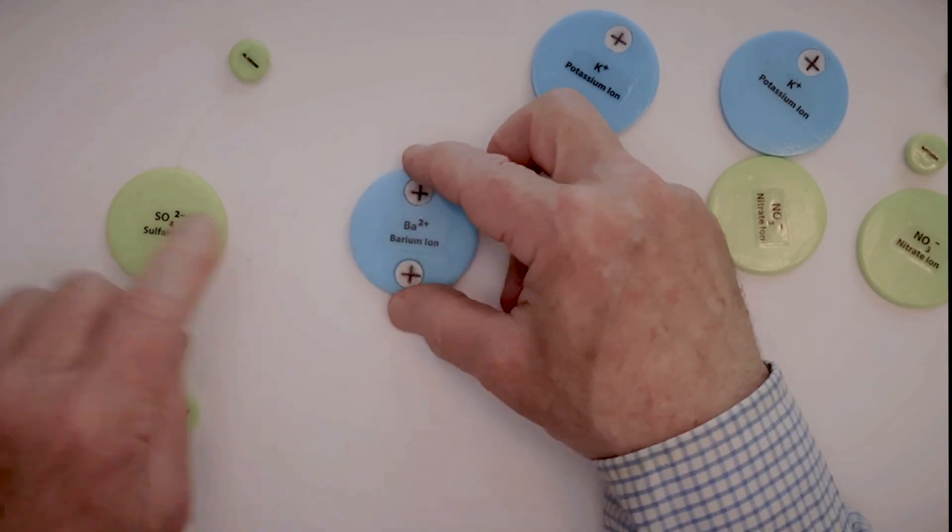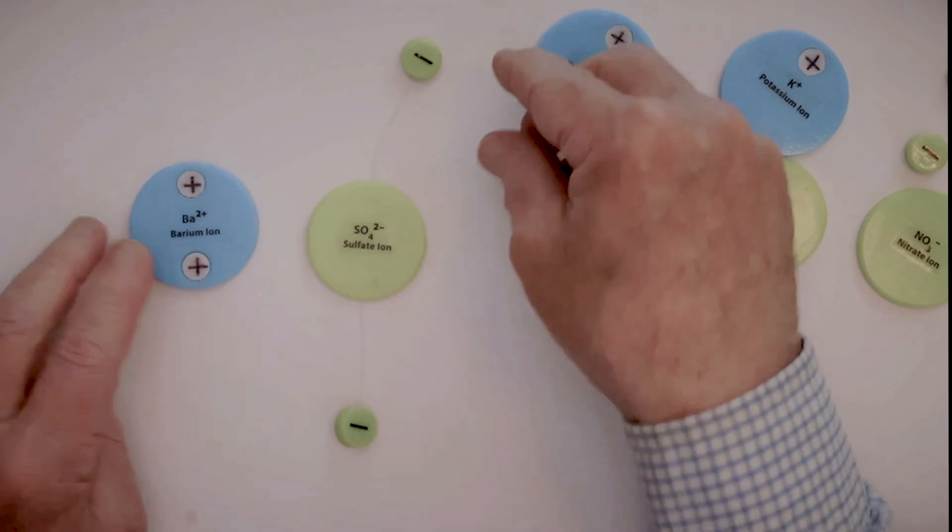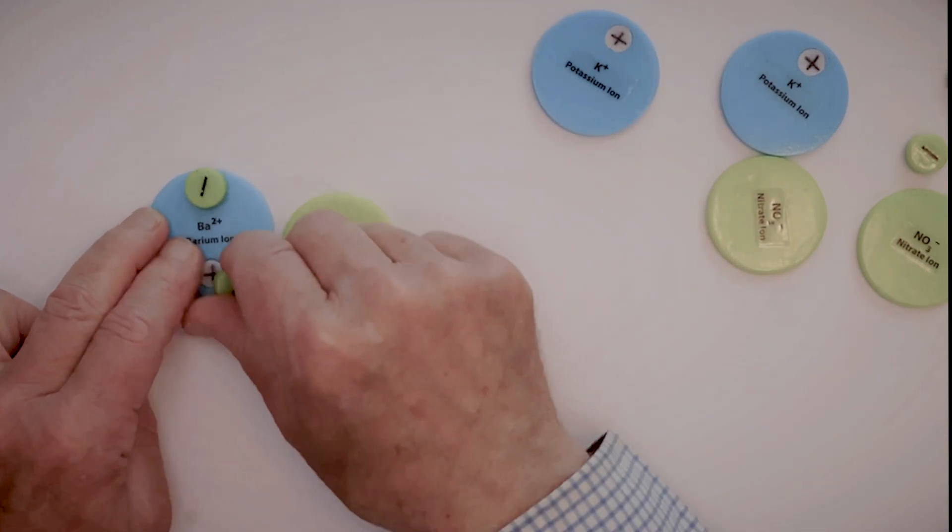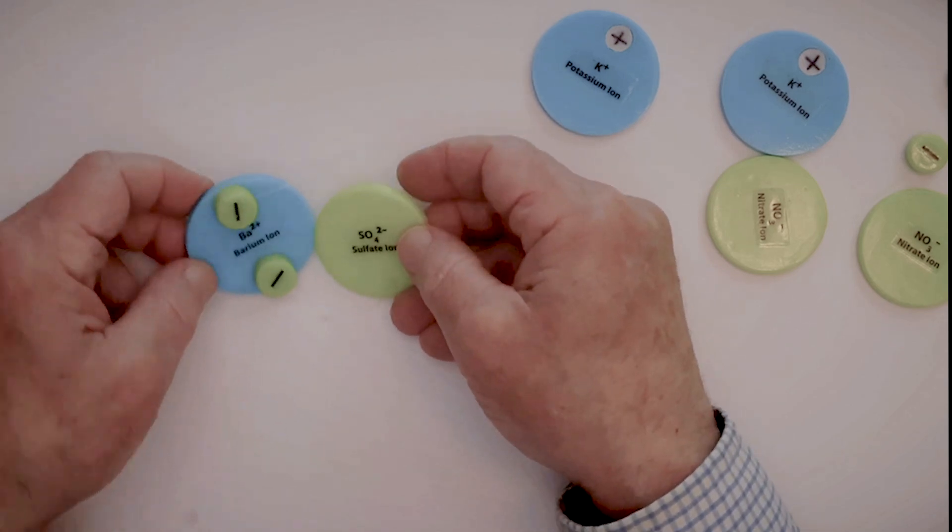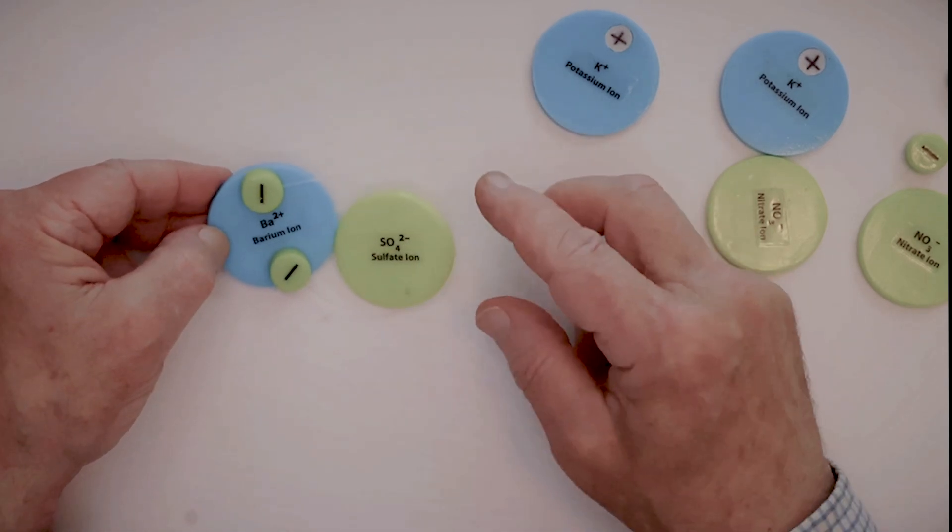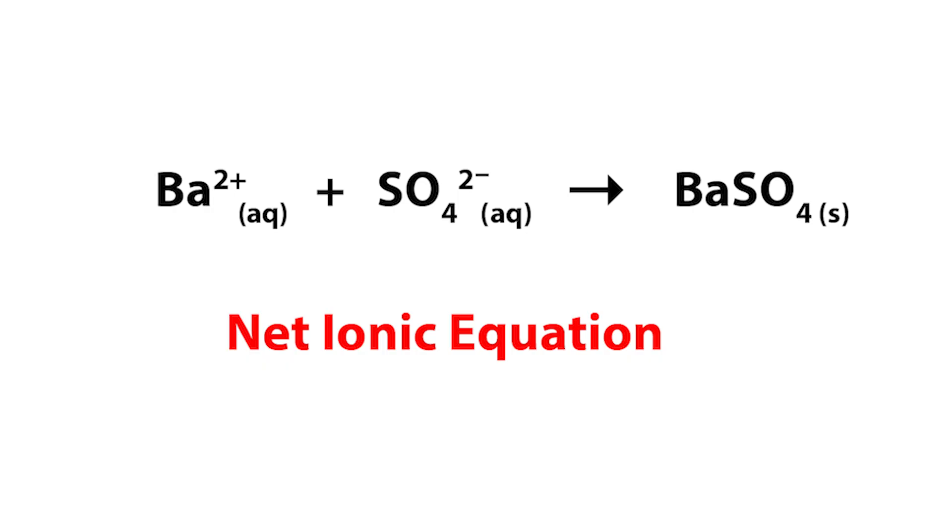And so we have a barium ion. Let's put it on that side, barium ion. We have a sulfate ion, and they go together. It's behaving better now. So we have barium, and we have sulfate. It comes together. That's your net ionic equation.